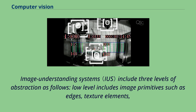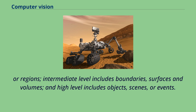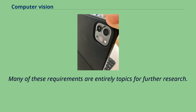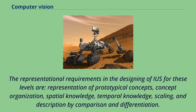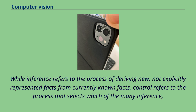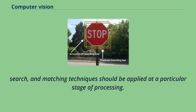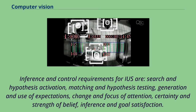The representational requirements for these levels include representation of prototypical concepts, concept organization, spatial knowledge, temporal knowledge, scaling, and description by comparison and differentiation. While inference refers to the process of deriving new facts from currently known facts, control refers to the process that selects which inference, search, and matching techniques should be applied at a particular stage of processing. Inference and control requirements include search and hypothesis activation, matching and hypothesis testing, generation and use of expectations, change and focus of attention, certainty and strength of belief, and inference and goal satisfaction.